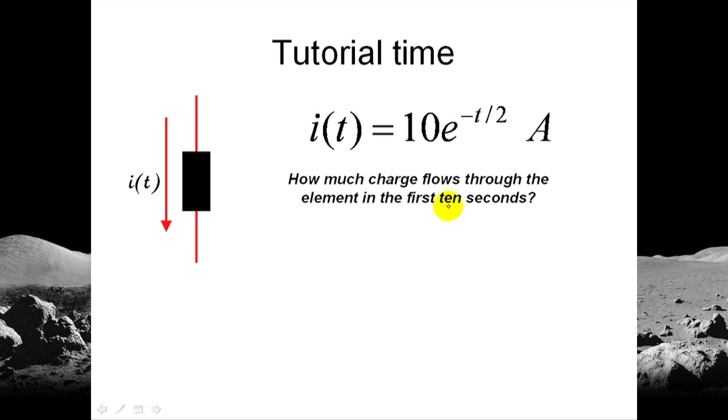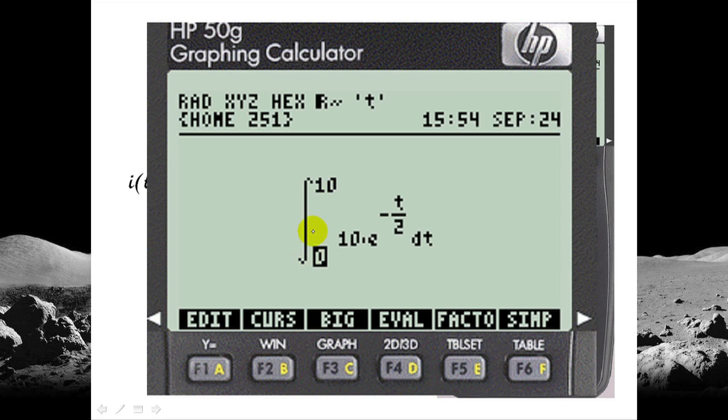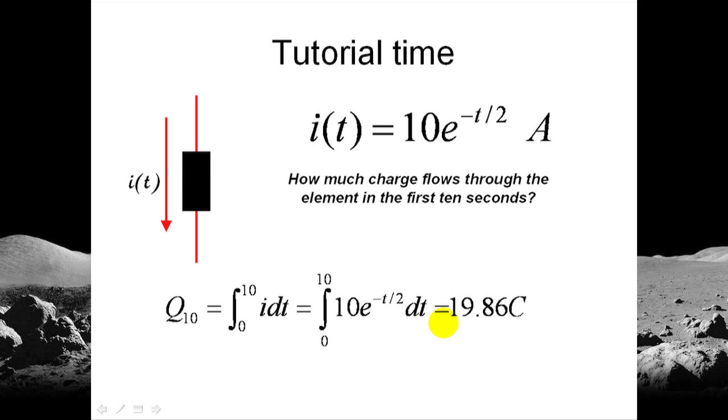We know what to do. We find the area under this curve between t0 and t10. In other words, we integrate that expression from zero to ten. Integral of the current from zero to ten. And that is the integral of ten exponential negative t over two. In the calculator, oh, that's too small. Let's zoom in. In the calculator, we enter the integral of ten exponential negative t over two. Enter. Evaluate. Nineteen eighty-six. That is the charge. The charge is nineteen eighty-six. So we say, in the first ten seconds, this current passed through that element nineteen point eighty-six coulombs.